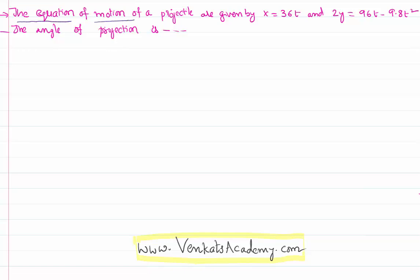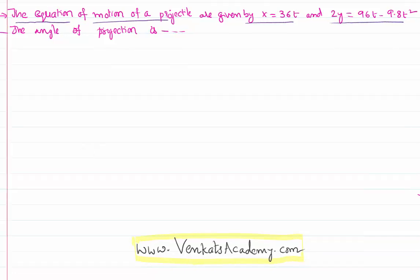The problem is like this. The equation of motion of a projectile is represented as x equal to 36t and 2y equal to 96t minus 9.8t square. And we need to calculate what is the angle of projection.